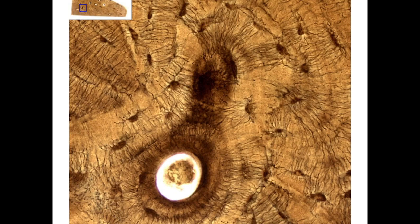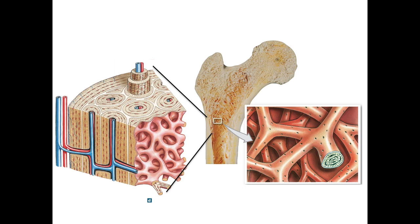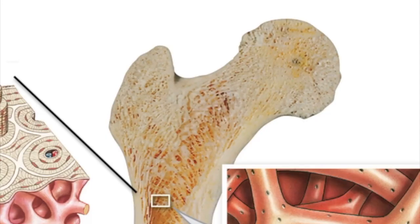So now you know the cells, the matrix, and the arrangement of compact bone and spongy bone. Next, you're going to be learning to identify bone features like the head, neck, and greater trochanter of the femur.